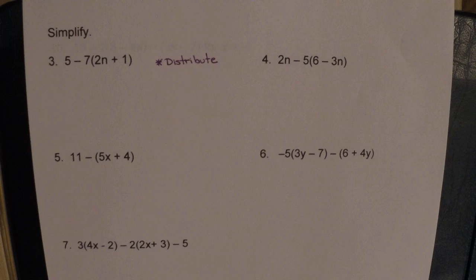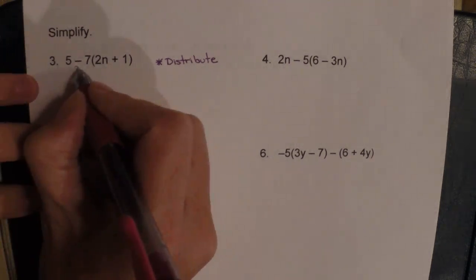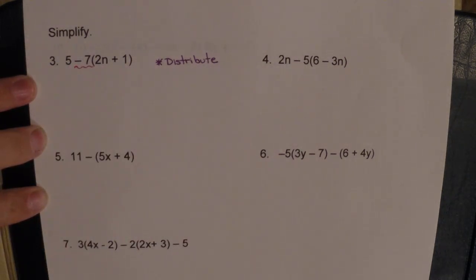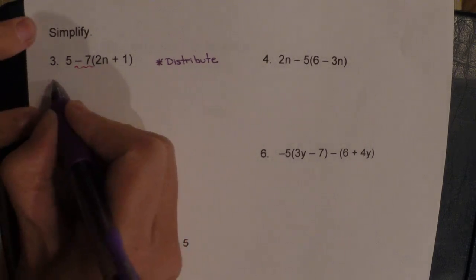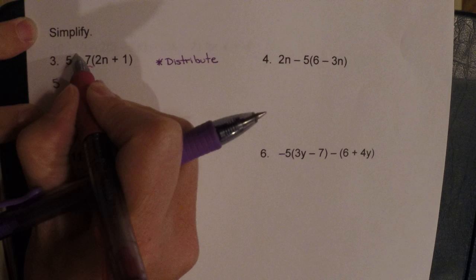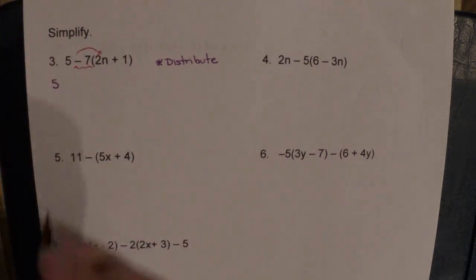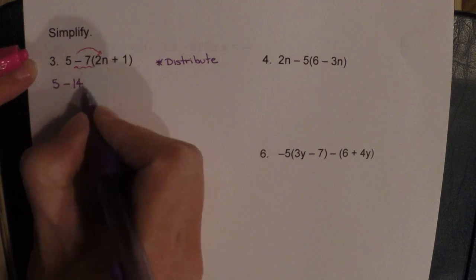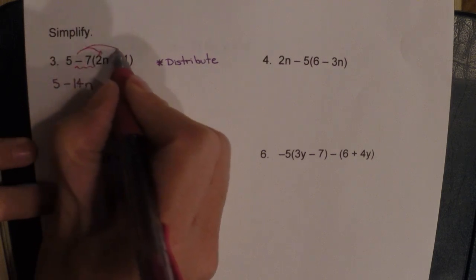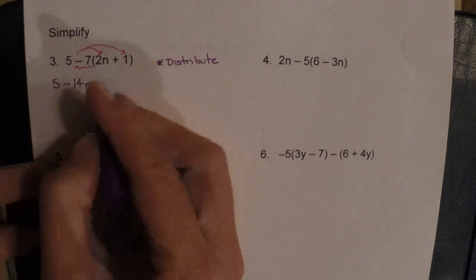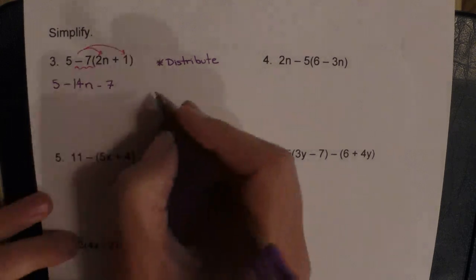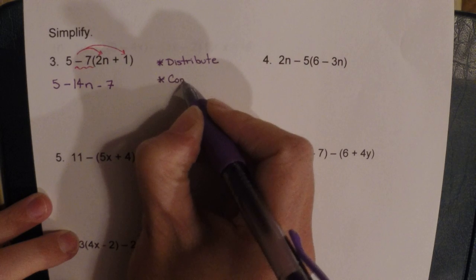You need to distribute whatever is outside the parentheses. Looking at number three, the number outside the parentheses is negative seven — do not lose the sign. The five doesn't really matter, so we just bring it down. The negative seven is what we distribute: negative seven times two gives negative 14n, then negative seven times positive one gives negative seven. Now you're ready for the second step, which is always to combine like terms.